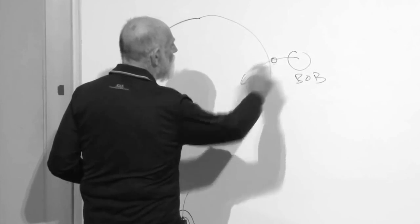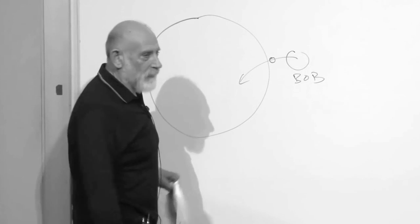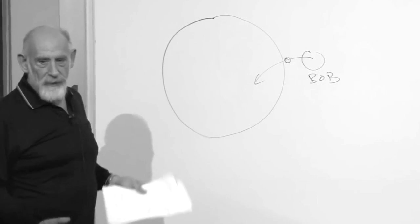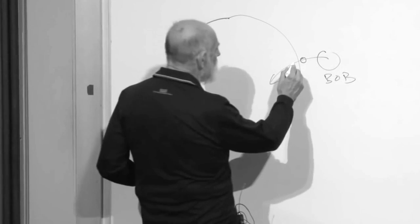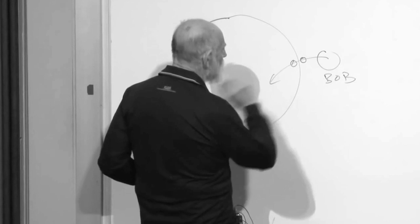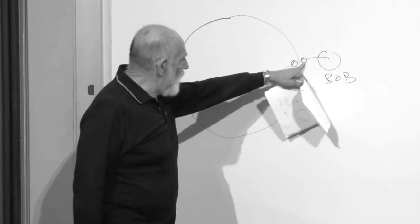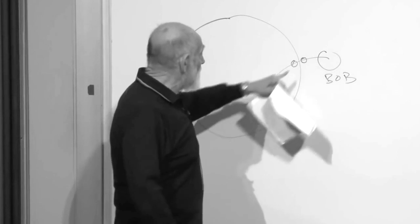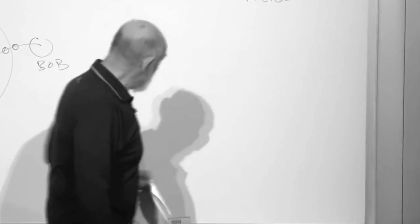As he falls through, he might make a measurement of what's going on over here. He might look, for example, for a virtual particle. And then he might also make an experiment over here. And these two experiments, or these two degrees of freedom, should be entangled. Why? Because empty space is entangled in this way.